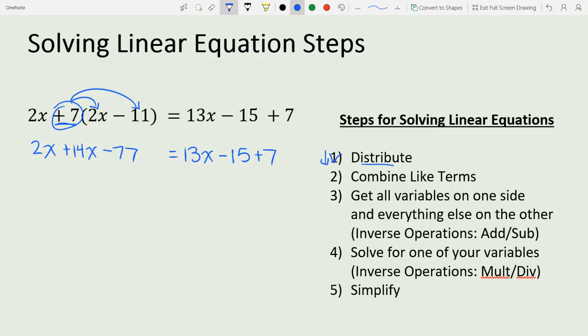Now that we're done with distribution, we're going to combine like terms. Like terms have the same variable and the same exponent. On the left side we have 2x and positive 14x, so 2x plus 14x is 16x, then we drop down minus 77 equals 13x minus 15 plus 7. On the right side we have minus 15 and plus 7, both constants without variables, so negative 15 plus 7 is negative 8. We drop everything else down.